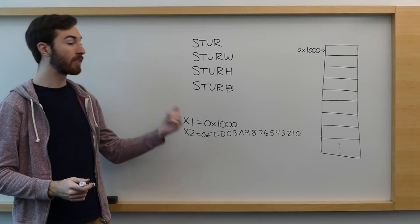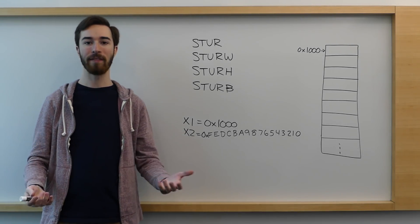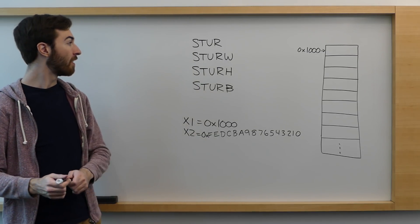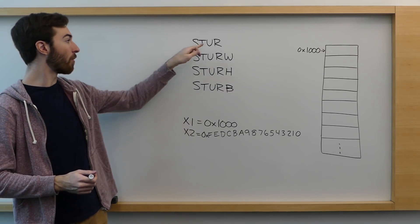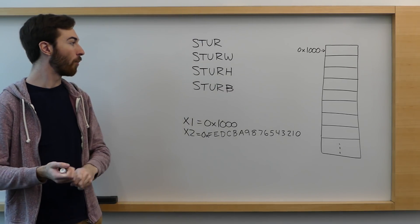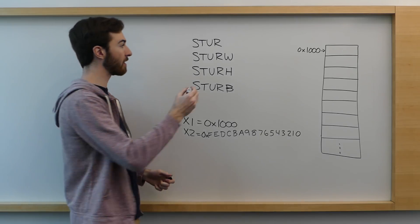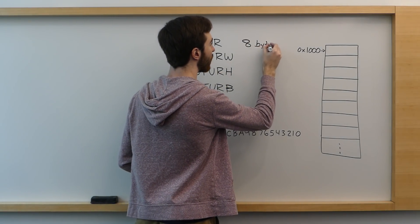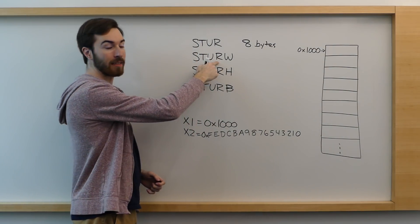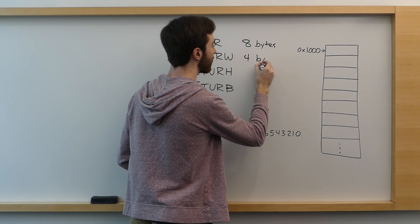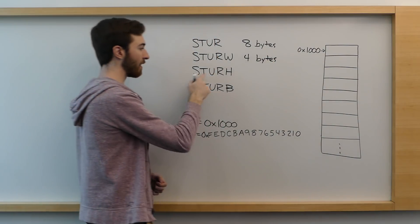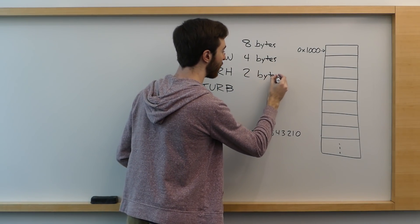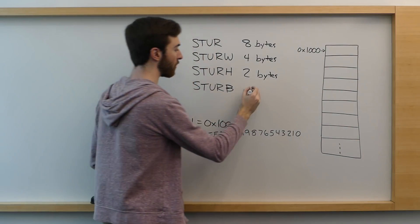So first let's talk about the store command in ARM. There are different variations of it, but they all operate in essentially the same way. There are four different types. The normal STUR command will store a full eight bytes from a register to memory. The STURW command will store four bytes. The STURH command will store two bytes. And the STURB command will store just one byte.